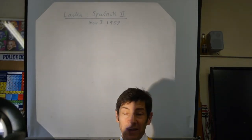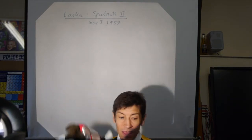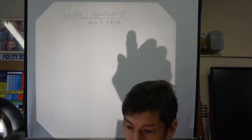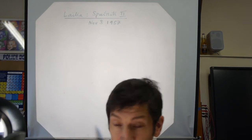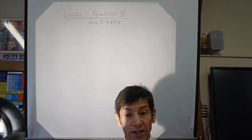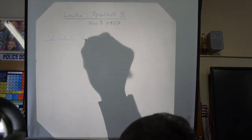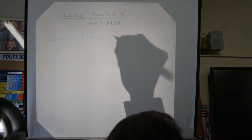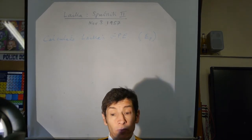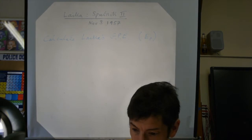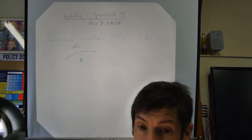Let's put the physics to use and do a calculation. You may remember Laika the space dog — the Russians put her in Sputnik 2 back in 1957 and sent her up into space. Let's calculate how much gravitational potential energy she had in orbit.